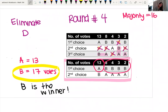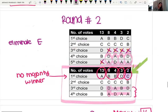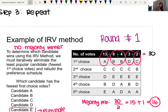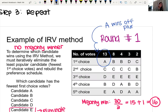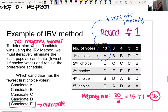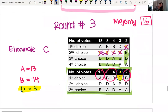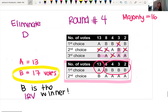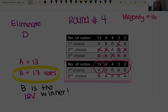Now B is the instant runoff voting winner, but if we remember and go back to the original table — based on plurality, candidate A would have won, because A had the most first choice votes. But with instant runoff, after doing this a few times, we ended up with A going head to head with B, and then B ended up getting the majority of the votes.